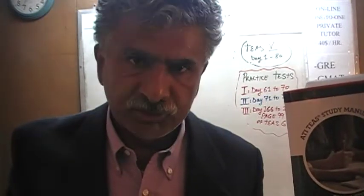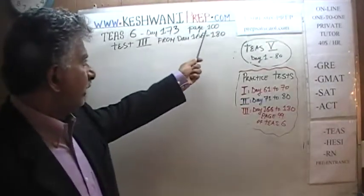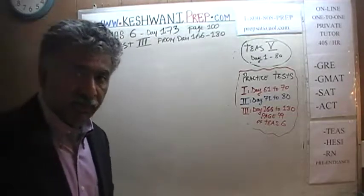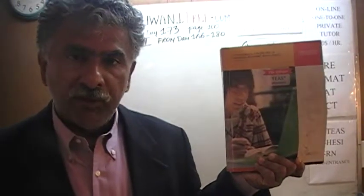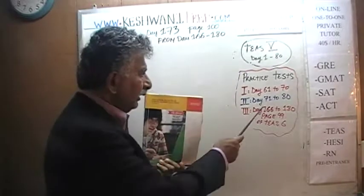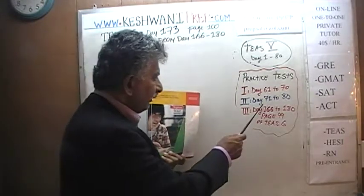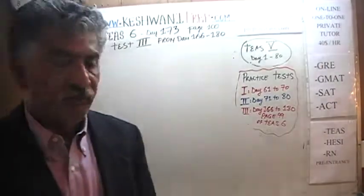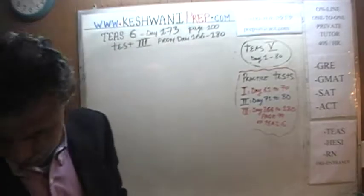If you do not own this book already, purchase one immediately — you're going to need it. Today is lesson number 173 and we are on page number 100. We are solving problems from the quiz that started on page 99, which we are referring to as test number three. Solutions to practice test one are on day 61 through 70, and practice test two from day 71 through 80. Today we'll solve problems 15 and 16.